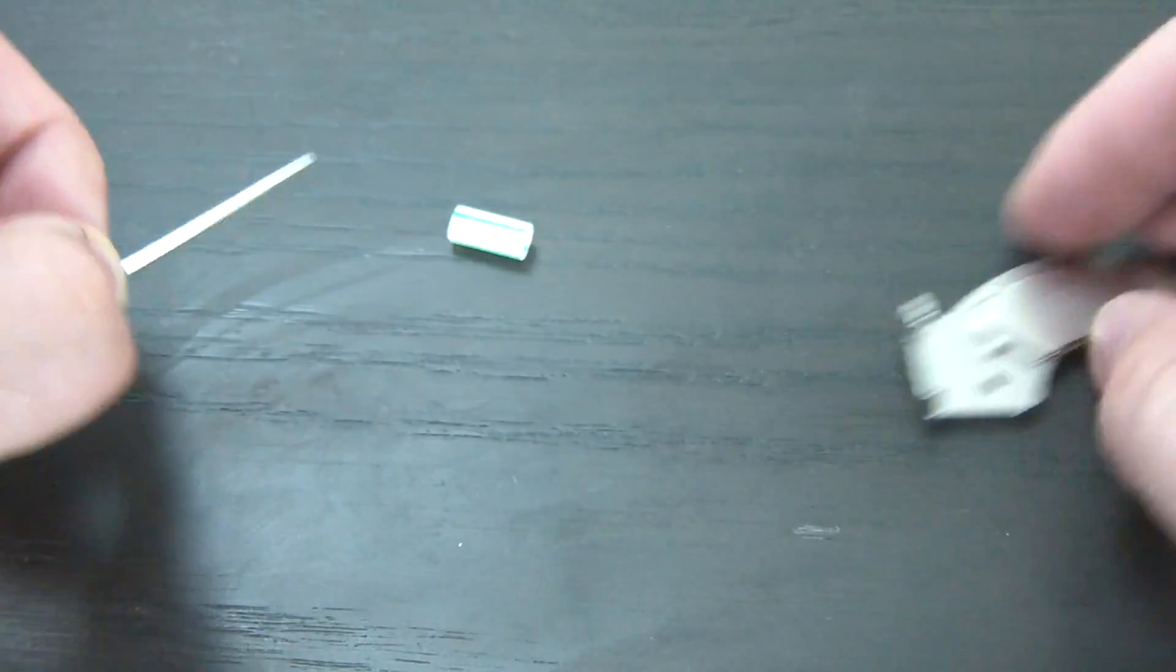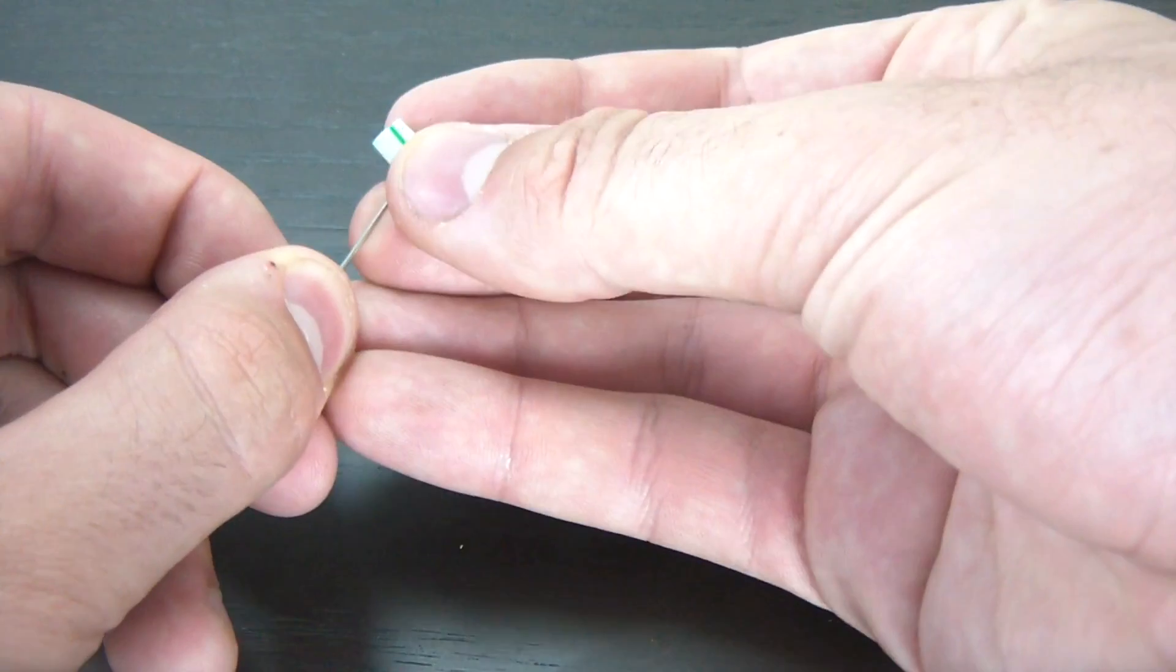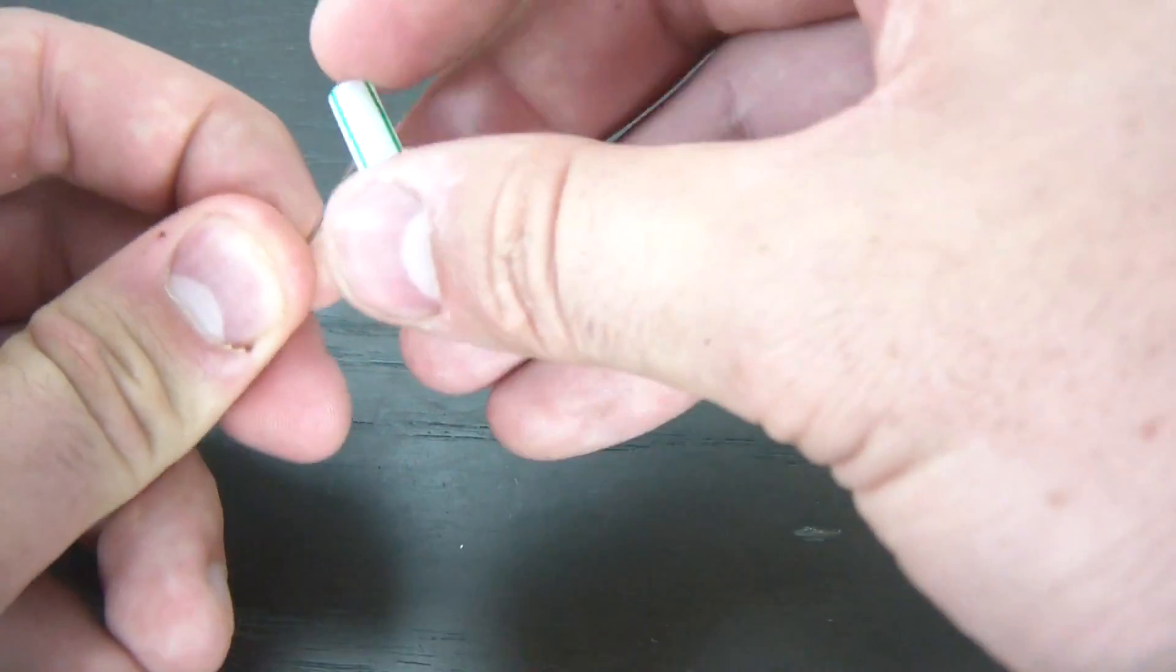Alright, after you magnetize it, get your straw and poke it through the middle, make sure it's kinda in the middle.